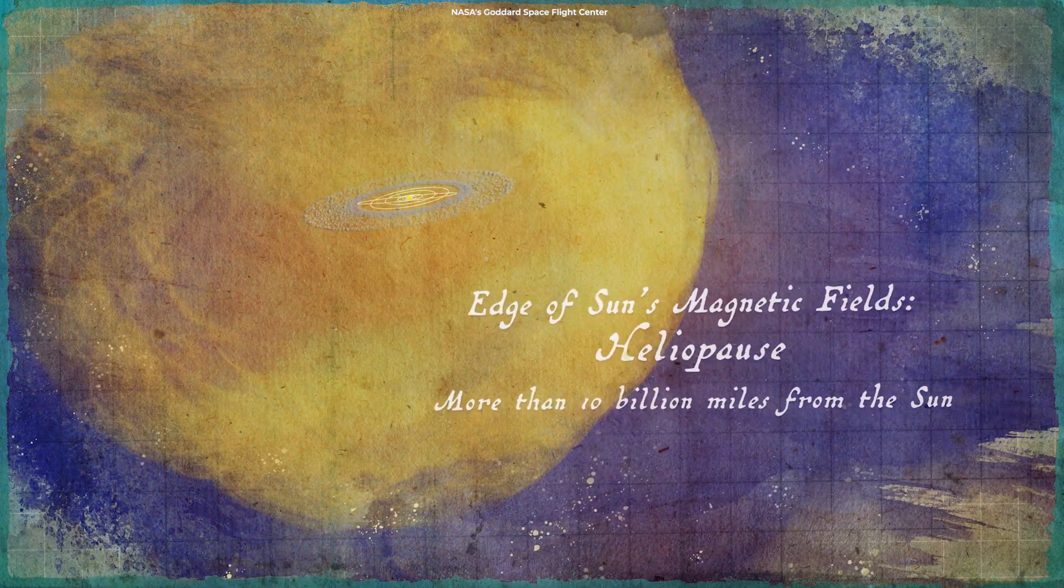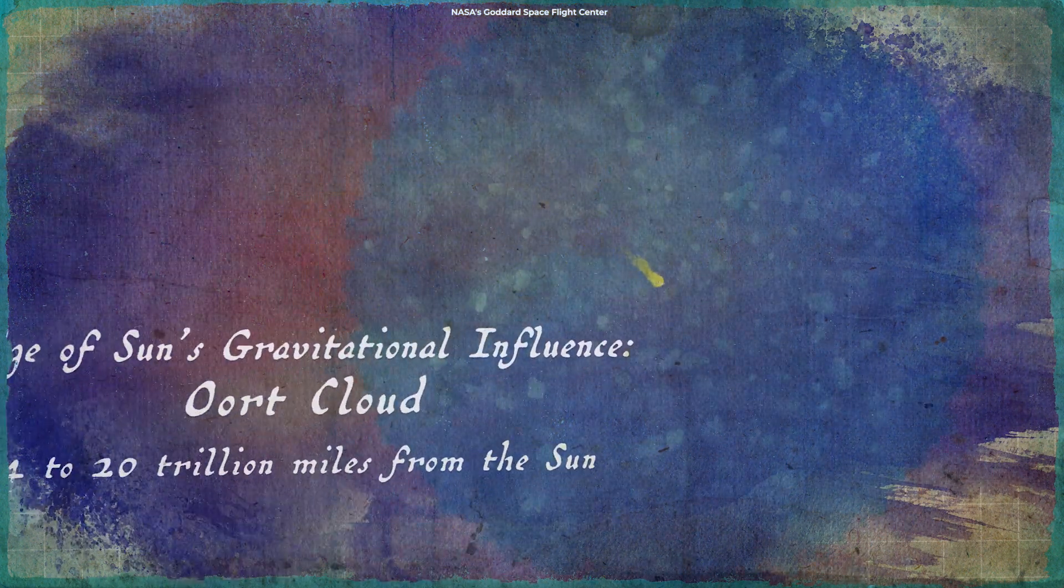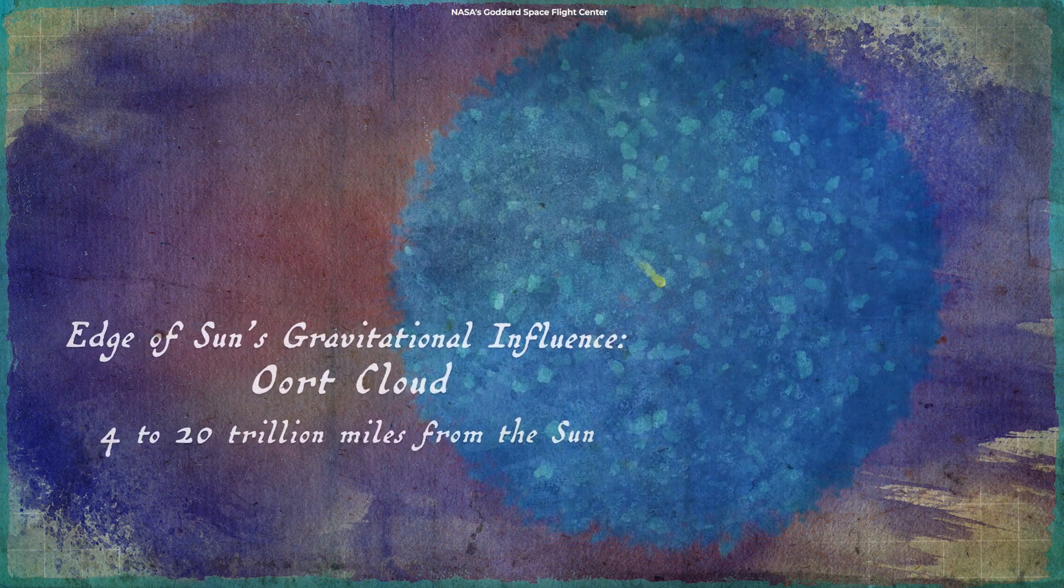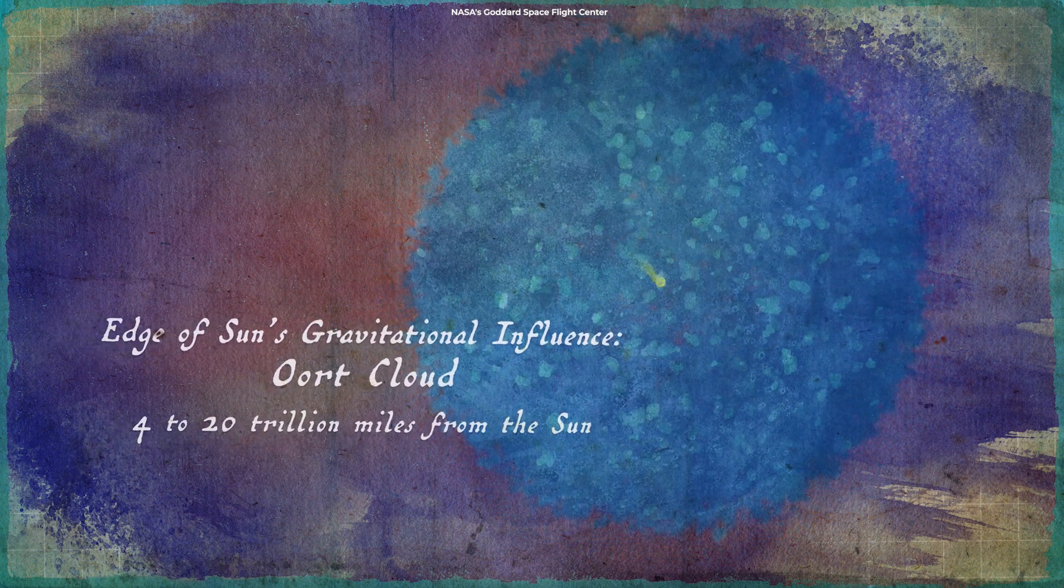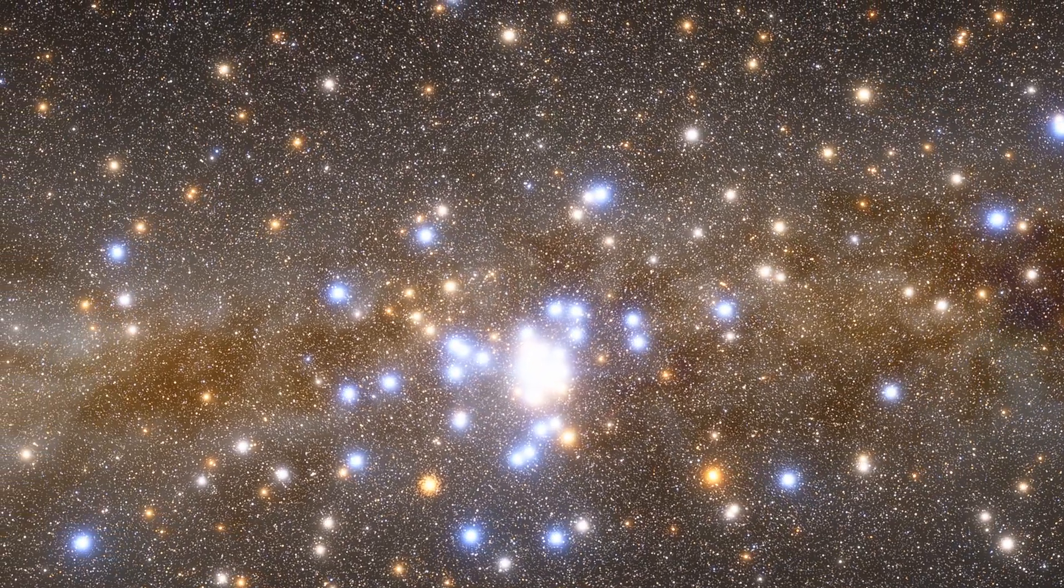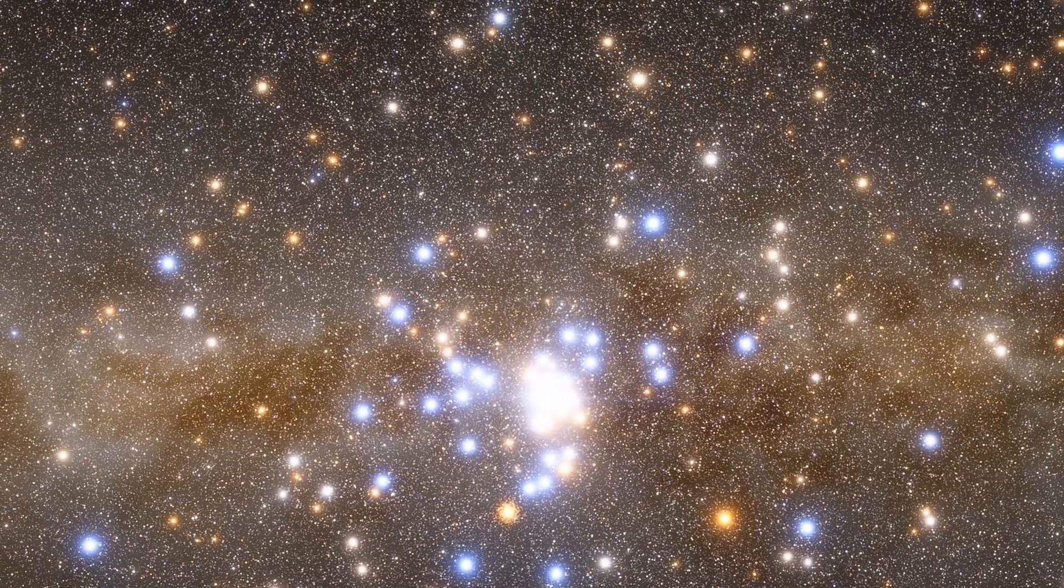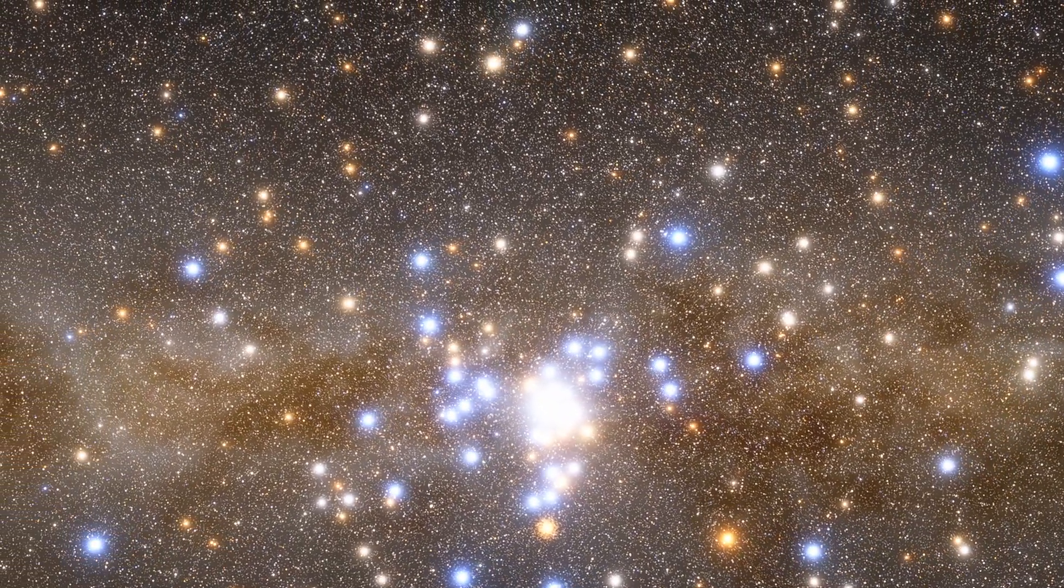The Oort cloud, a spherical layer of icy objects surrounding our Sun, occupies a space at a distance between about 2,000 and 100,000 astronomical units from the Sun. That means if our solar system was part of the dense galactic center, there would be a number of stars existing within our Oort cloud.